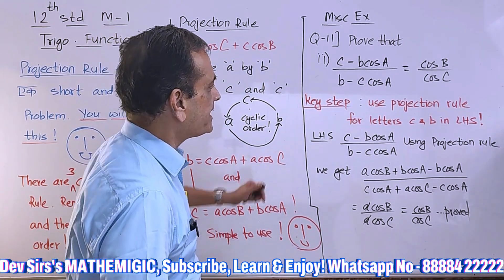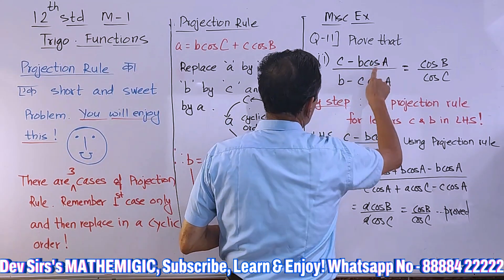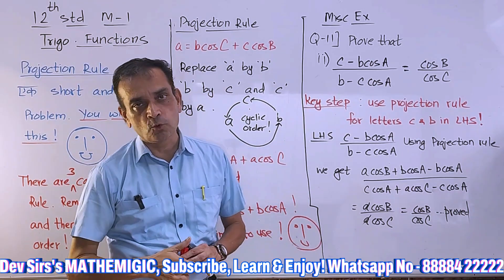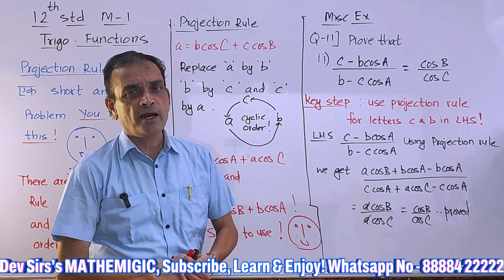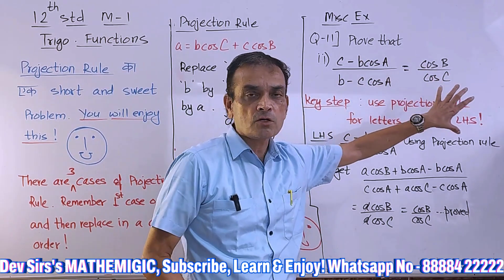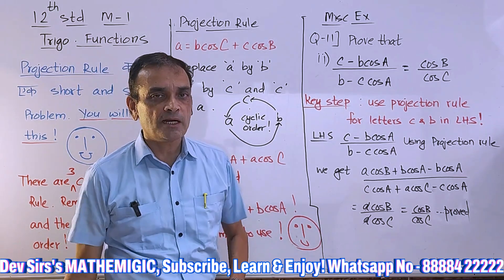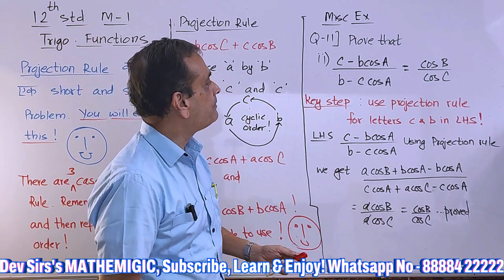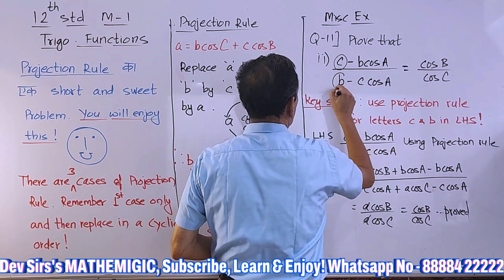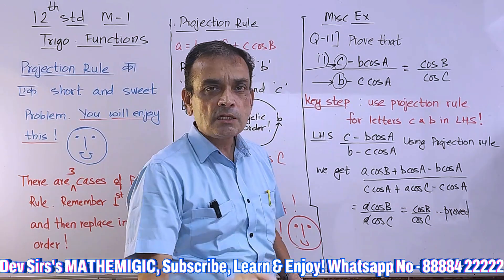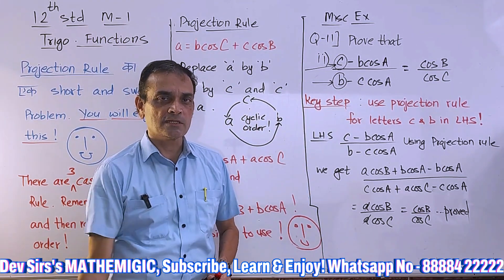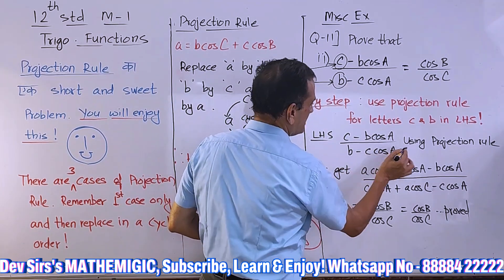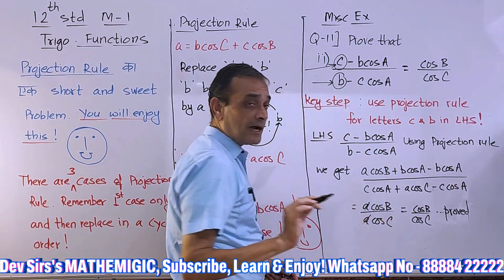Miscellaneous exercise, question 11, second one: Prove that (c − b cos A) / (b − c cos A) = cos B / cos C. There is cos A everywhere, so sign rule is not applicable here. When we solve, we use projection rule for cos A and convert this into cos B and cos C. Use projection rule for letters c and b in the left hand side — as simple as that.